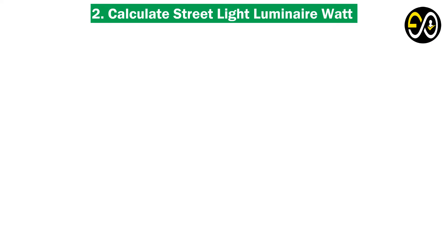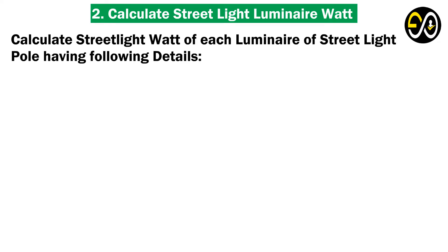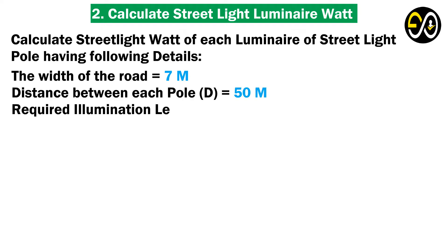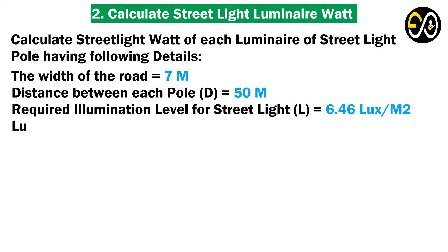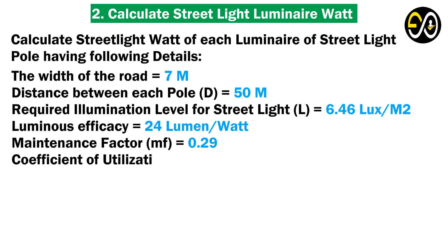Example 2: Calculate the watt of each luminaire of a street light pole given the following details. The width of the road equals 7 meters. Distance between each pole D equals 50 meters. Required illumination level for street light L equals 6.46 lux per square meter. Luminous efficacy is 24 lumens per watt. Maintenance factor MF equals 0.29. Coefficient of utilization factor CU equals 0.9.